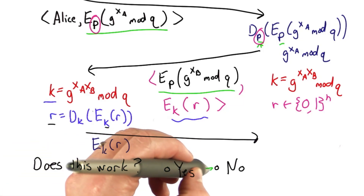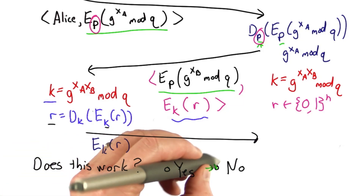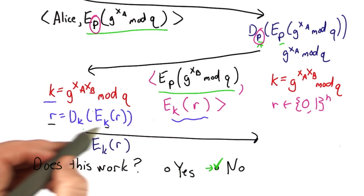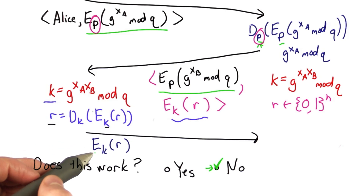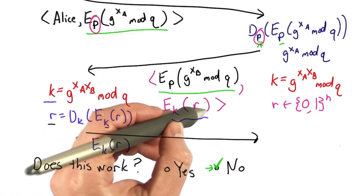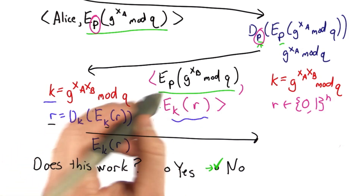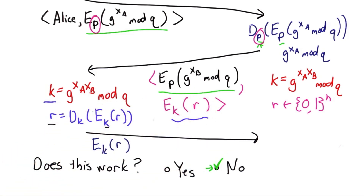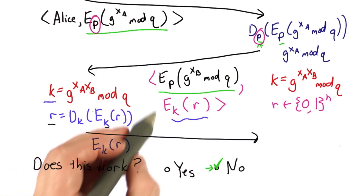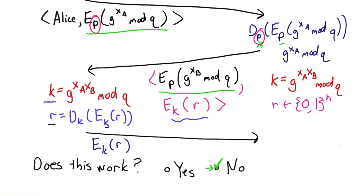The answer is no, this doesn't quite work. The reason it doesn't work is that this message — encrypting R with a key — is exactly what the server sent. So this certainly doesn't prove knowledge of K, because this could just be reflected back to the server.